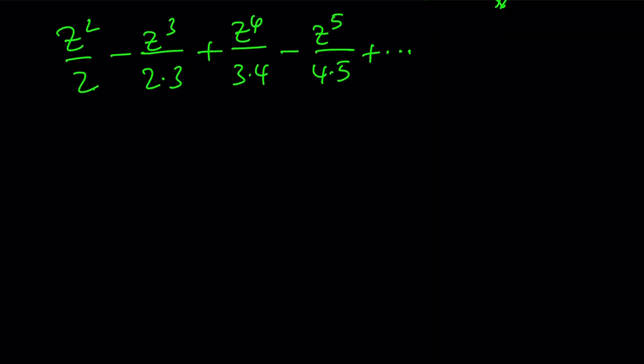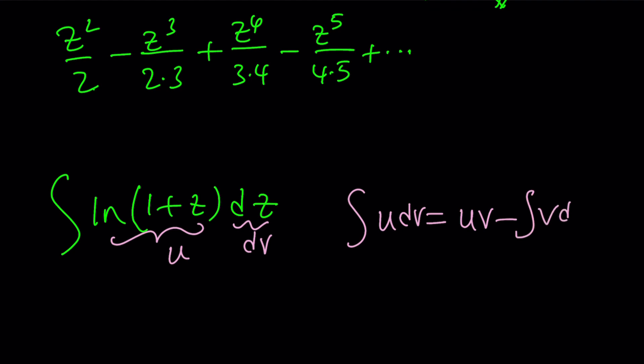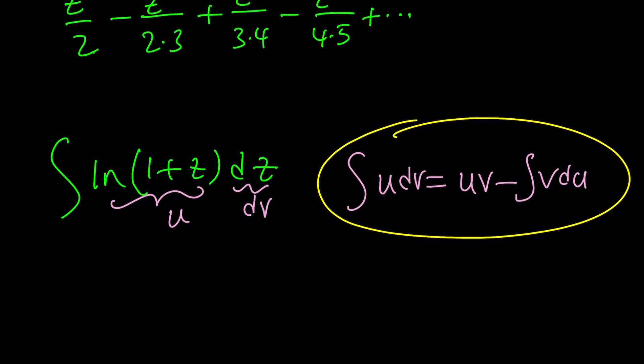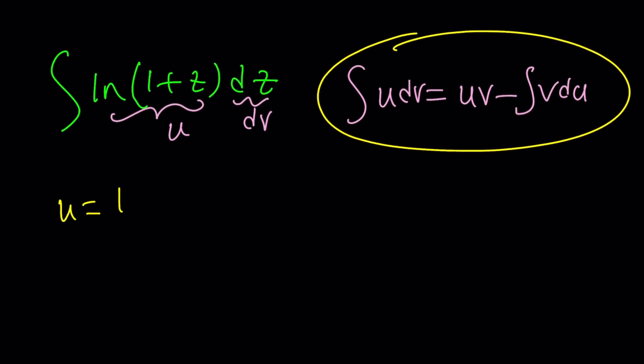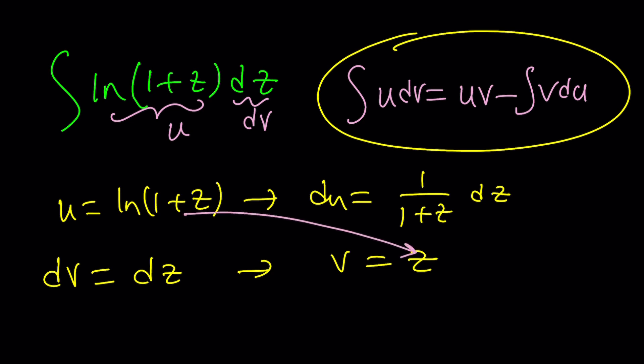But the million dollar question is, how to integrate this expression? To integrate it I'm going to use integration by parts. We're going to call this u and we're going to call this dv, and you should know the formula: the integral of u dv is uv minus the integral of v du. This comes from the product rule. Here u equals ln 1 plus z, we should find du which is 1 over 1 plus z dz. And if dv is dz then you just integrate and you get v equals z. Don't worry about the constant.